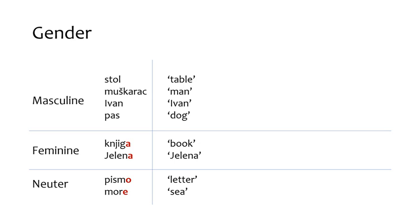Feminines like knjiga and Jelena end in A, and neuters end in O or E. Each gender includes a variety of concrete and abstract nouns, as well as animates and inanimates.